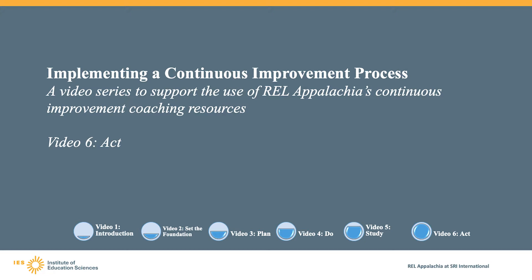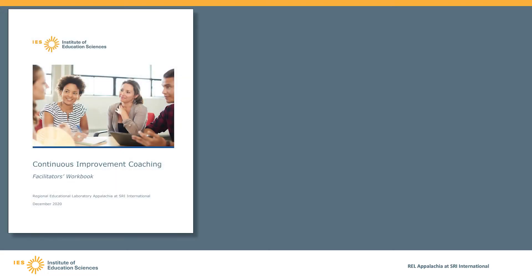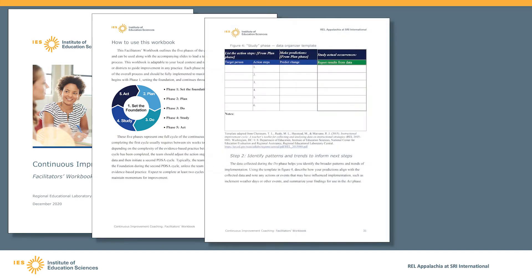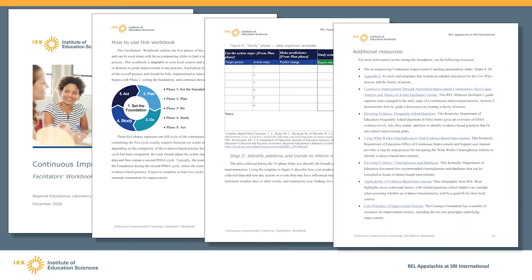To facilitate the use of these resources, workbook pages are provided whenever relevant. These resources include a description of a five-phase continuous improvement process, along with templates and links to additional resources. You can access the full set of materials by clicking on the links in the description of this video below.